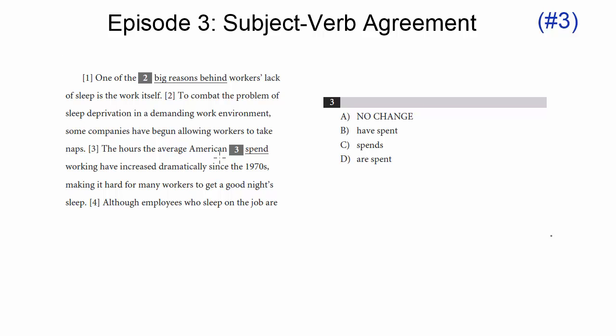Well, notice the subject of this verb, because spend is a verb. The subject is the average American. Now, the average American is singular. It's one person, right? The average American, one individual, the average person.